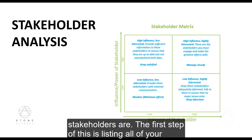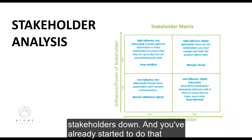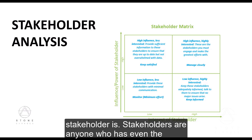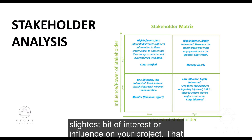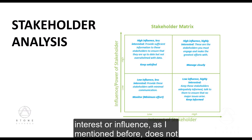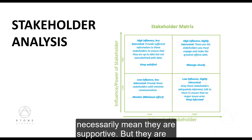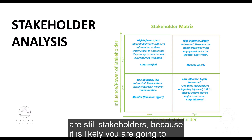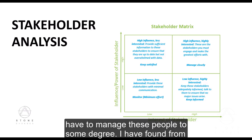The first step is listing all of your stakeholders down, and you already started to do that as part of the project canvas. Stakeholders are anyone who has even the slightest bit of interest or influence on your project. That interest or influence does not necessarily mean they are supportive — even those who might be challenging the project are still stakeholders, because you are likely going to have to manage these people to some degree.